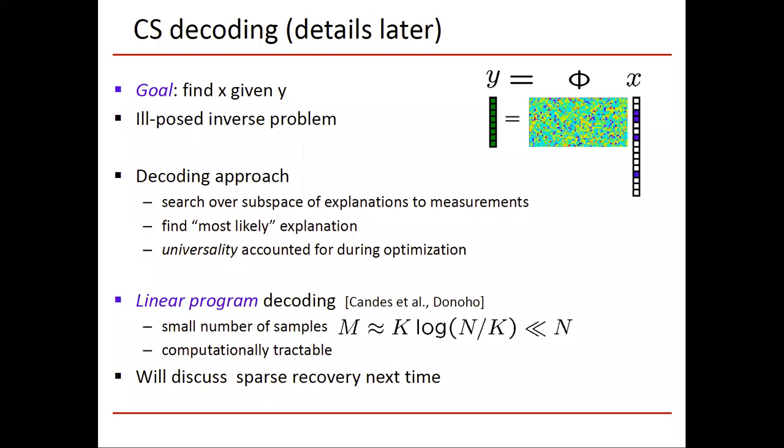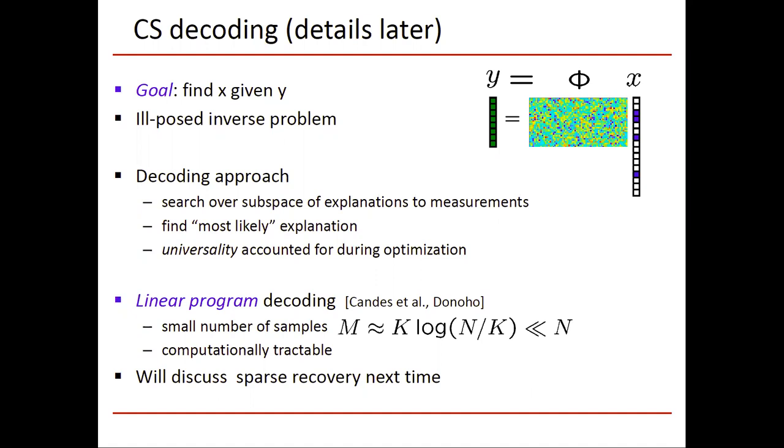We search over the subspace of explanations to measurements and we find the most likely explanation. Recall, x is not any x, x is a sparse x. So although the number of total unknowns in x is typically going to be significantly larger than the number of measurements in y, the number of non-zeros in x is going to be quite a bit smaller than the number of measurements in y.